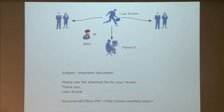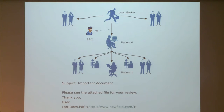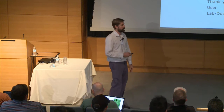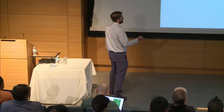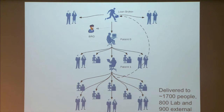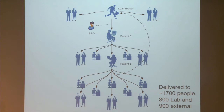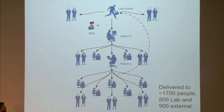People might have otherwise been suspicious of a random link, but when it comes from someone they're expecting a message from and creates urgency, it succeeded. The phishing went to about 1,700 people — 800 inside the lab, 900 external. A funny side note: patient one had some relationship to the original loan broker, so when she got infected and her credentials stolen, the attackers used her account to send the phishing back to the original person who had started the whole chain.